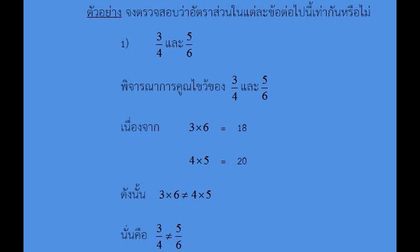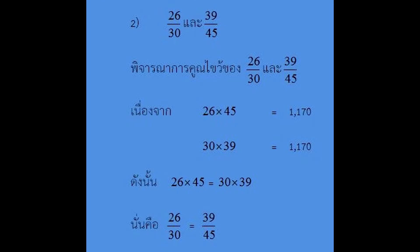พิจารณาการคูณไขว้ของอัตตาส่วน 3 ต่อ 4 และอัตตาส่วน 5 ต่อ 6 เนื่องจาก 3×6=18 และ 4×5=20 ดังนั้น 3×6 ไม่เท่ากับ 4×5 นั่นคืออัตตาส่วน 3 ต่อ 4 ไม่เท่ากับอัตตาส่วน 5 ต่อ 6. มาดูข้อที่ 2: อัตตาส่วน 26 ต่อ 30 และอัตตาส่วน 39 ต่อ 45 พิจารณาจากการคูณไขว้เหมือนเดิม เนื่องจาก 26×45=1170 และ 30×39=1170 เช่นกัน ดังนั้น 26×45 เท่ากับ 30×39.